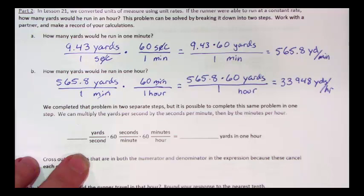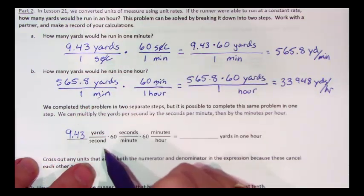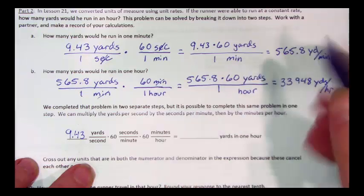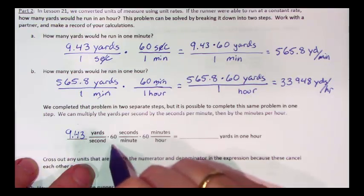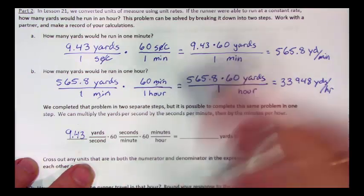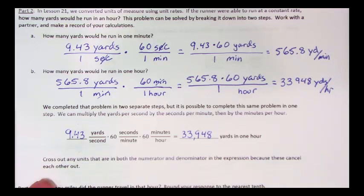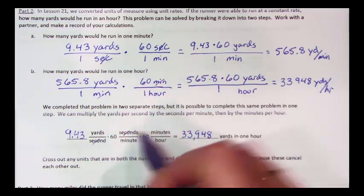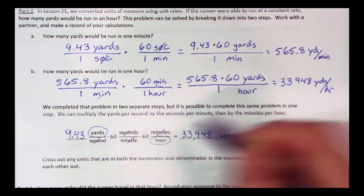We did this problem in two separate steps, but we could complete the same problem in one step. If we started out with 9.43 yards per second and multiplied that by 60 seconds per minute and then 60 minutes per hour, we would end up with the same answer. Go ahead, do it on your calculator. 9.43 times 60 times 60 again. We'll get 33,948 yards in one hour. Remember, we're going to cross out any units so that both the numerator and the denominator in the expression—seconds and seconds, both in the denominator and the numerator, minutes and minutes, both in the denominator and the numerator—that leaves us with just yards and hours, yards in one hour.